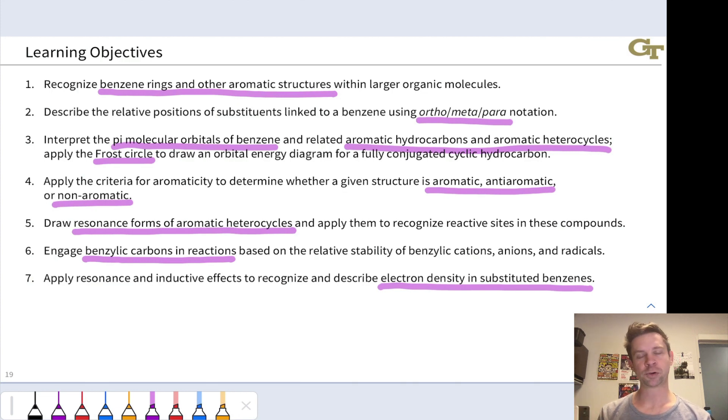And this is going to be really important as we move into reactions of aromatic and heteroaromatic compounds, where the distribution of electron density is going to be our guiding light in predicting how these reactions occur.